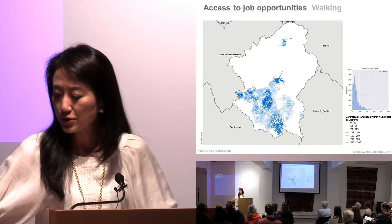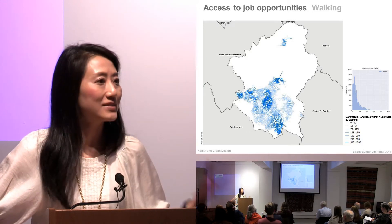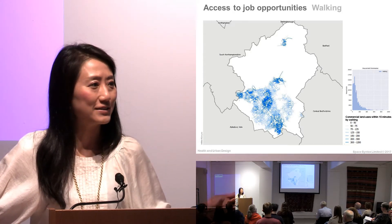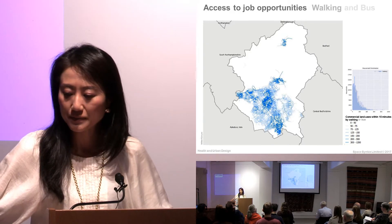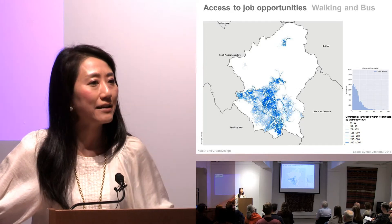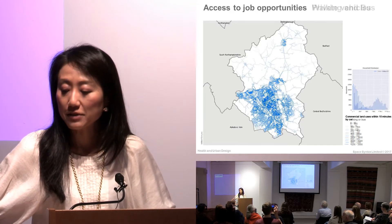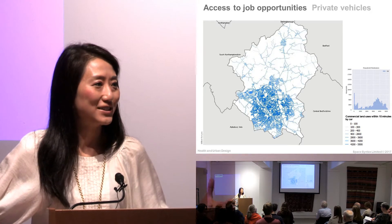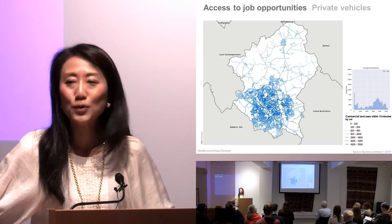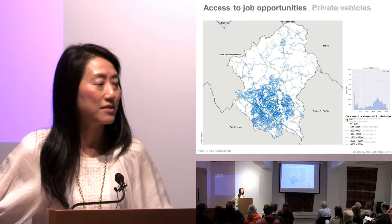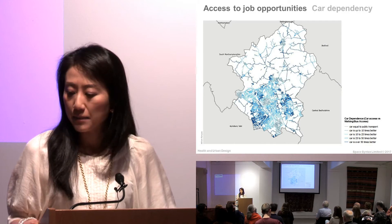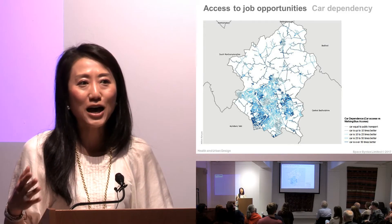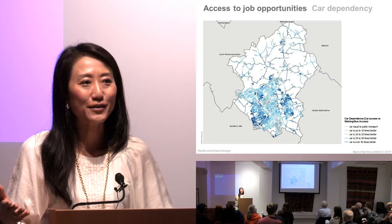This is purely spatial and physical environment — it doesn't take into account what kind of jobs — but you can see how the physical environment influences job opportunities. Comparing walking with public transport is slightly enhanced. But comparing with private vehicles, you can see how much advantage the private vehicle network brings, and how public transport is not matching with private vehicles. Calibrating between these two parameters, you can evaluate how much more advantageous private vehicles might be.